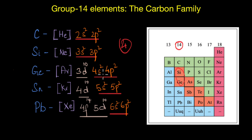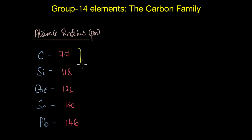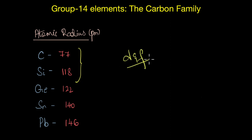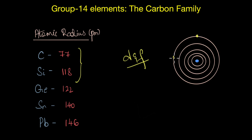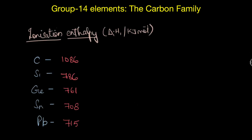As we go down the group we notice the presence of completely filled d and f orbitals. The poor shielding effect of d and f orbitals creates anomalies in their general behavior. For example, atomic radius increases substantially from carbon to silicon, but from silicon to lead the increase is very nominal — not as large as normally expected — because the poor shielding causes valence electrons to experience more nuclear attraction, pulling them closer to the nucleus.